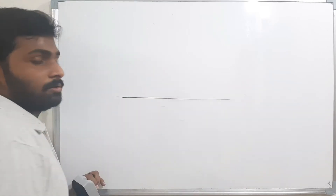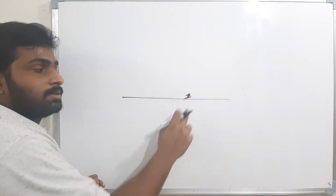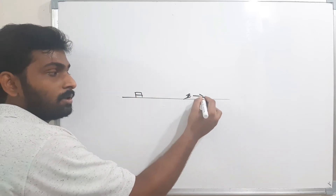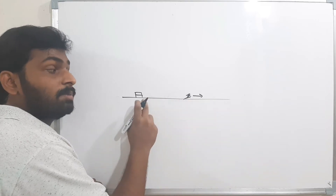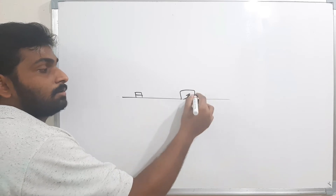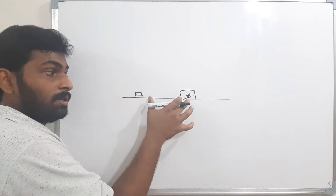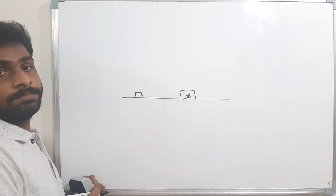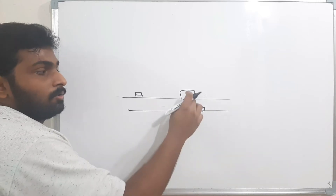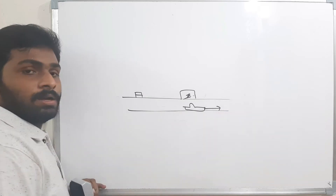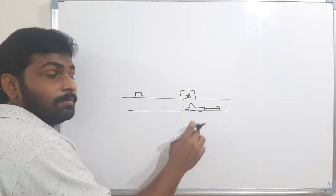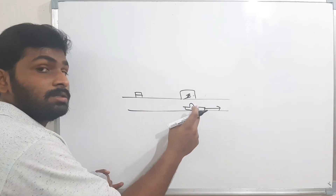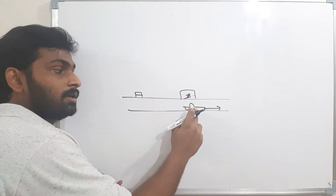Consider this example: there is a road and a person named Sarat. There is a bench on the road. When Sarat is moving away from the bench, I say he is in motion with respect to the bench. After moving some distance he stops at a bus stand for five minutes — the distance between Sarat and the bench is not changing, so I say Sarat is at rest with respect to the bench.